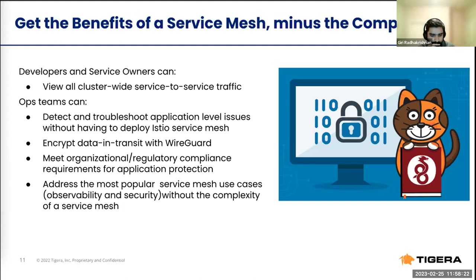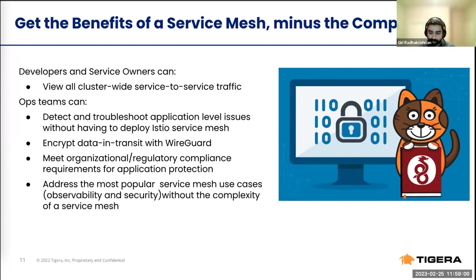Security posture is another benefit. Some compliance requirements are specifically around application-level protection — there are compliance standards with a line item requiring you to state that you have a web application firewall installed to pass your compliance exam. Calico integrates seamlessly with Istio to enforce layer 7 network policy within the Istio service mesh. Calico is known for granular network policy implementation beyond basic Kubernetes policies, and with the Istio integration you can add application layer attributes like HTTP methods — PUT or GET — or even include actual URL paths in your policies.